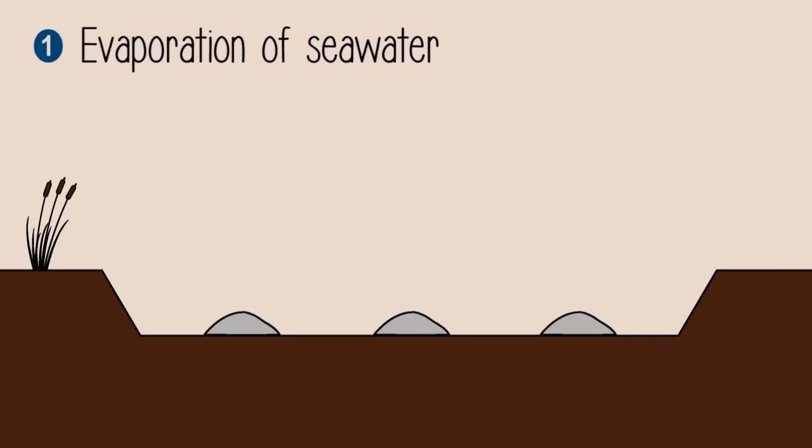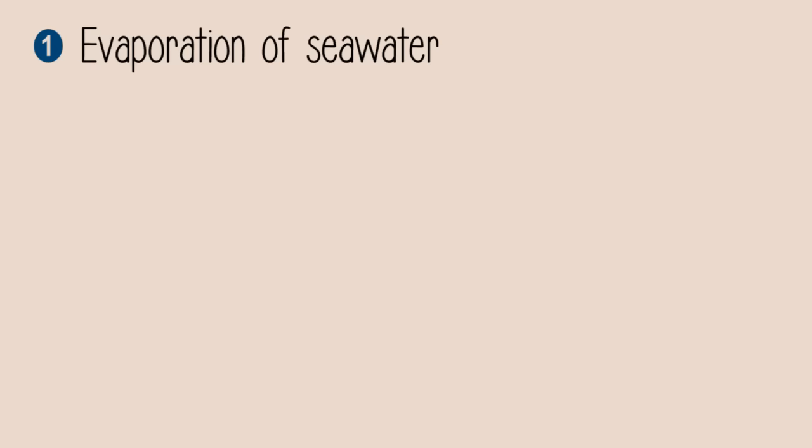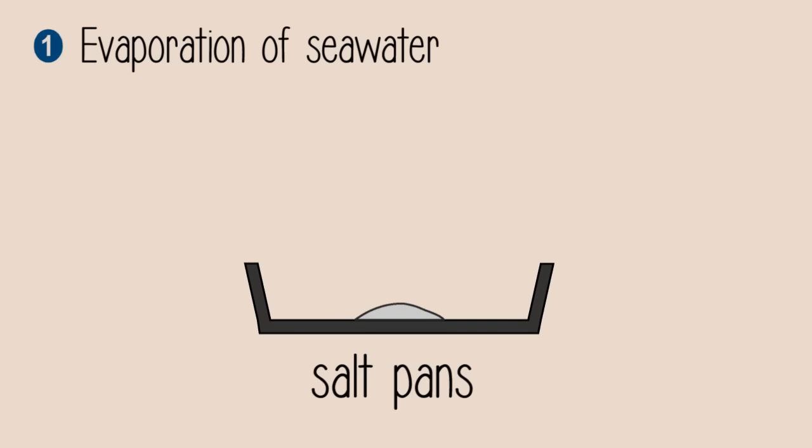This needs to be done a few times to get nearly pure sodium chloride. These areas where seawater is evaporated are called salt evaporation ponds. Sometimes this is done on a smaller scale in shallow metal pans called salt pans.